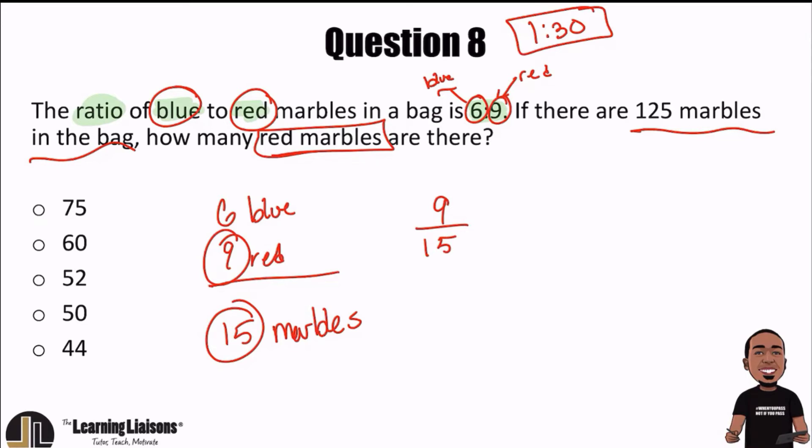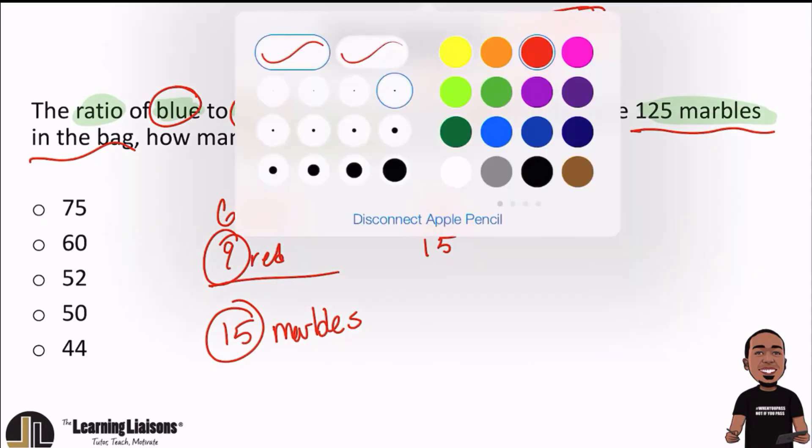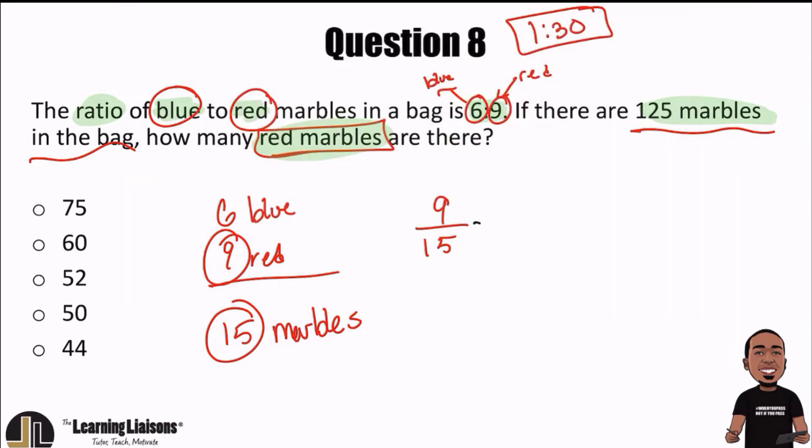This is what we want because our answer, we're trying to get red marbles from the total. So if nine out of every 15 are red, well, then what we'll do is find out what 9 fifteenths of 125 is.